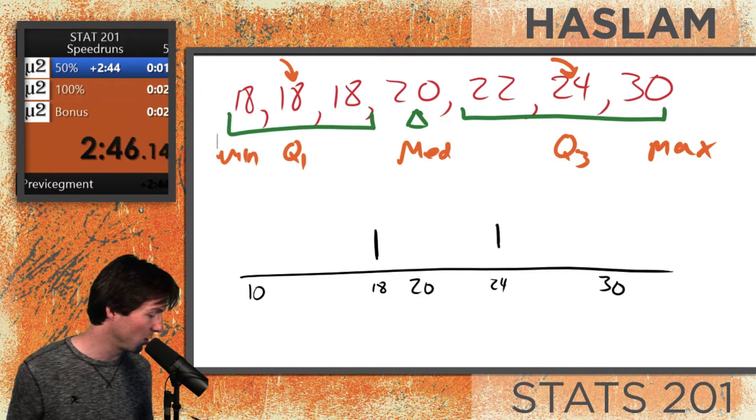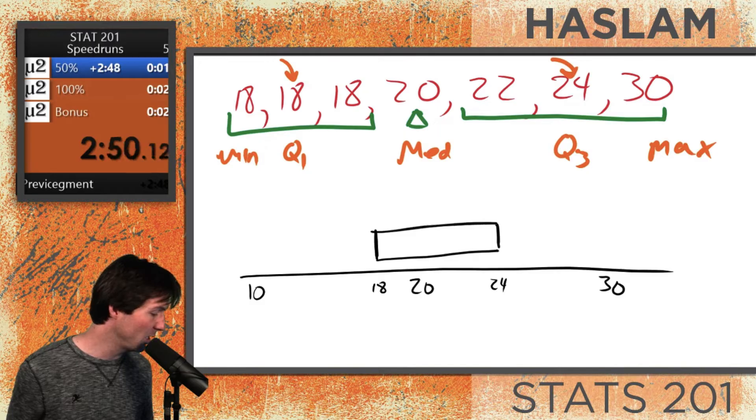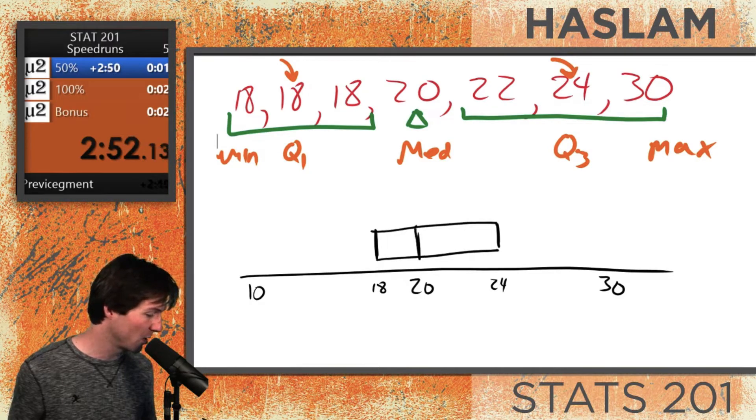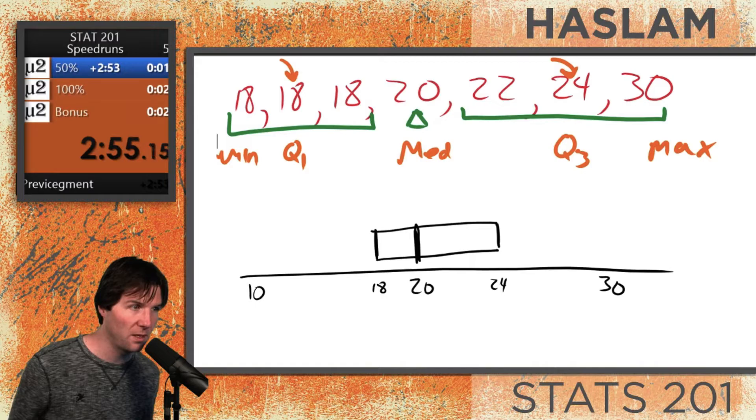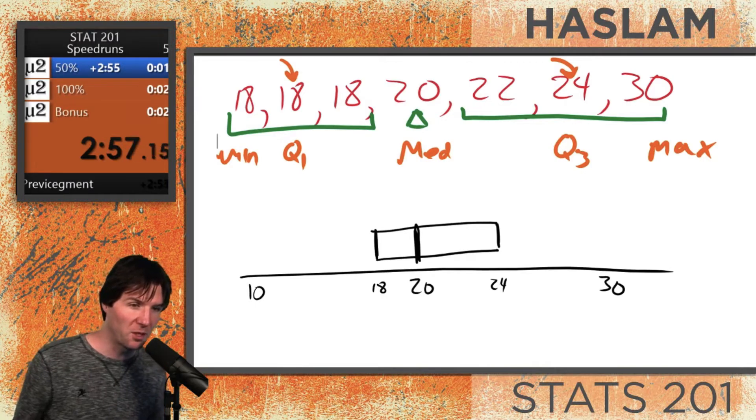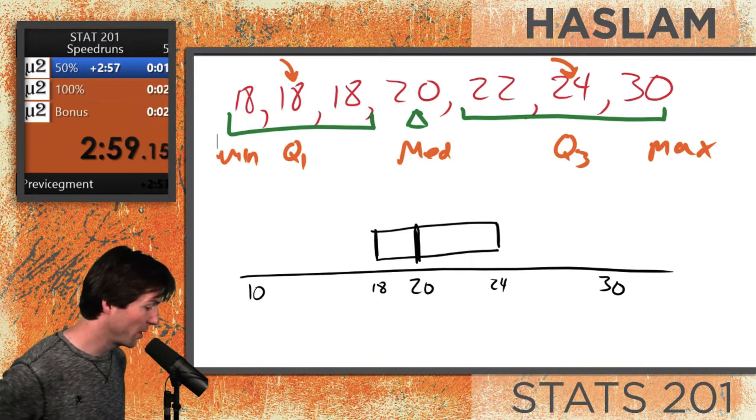This is the box of the box plot, which denotes the 25th through the 75th percentile. The median does not have to be in the center of the box. If you notice, that's where the median is at 20. We have right here in five number summary.